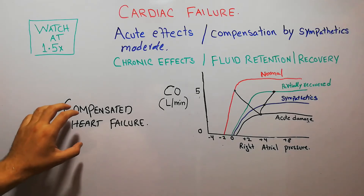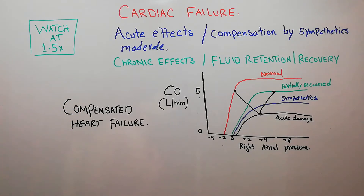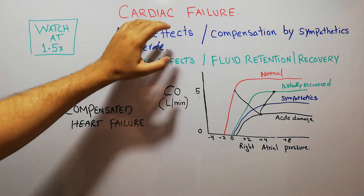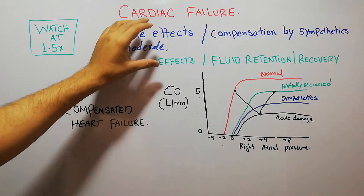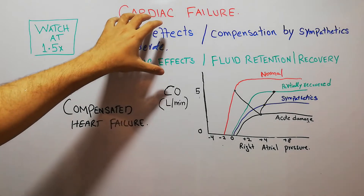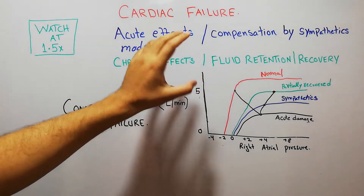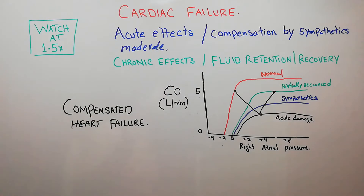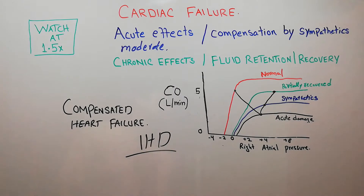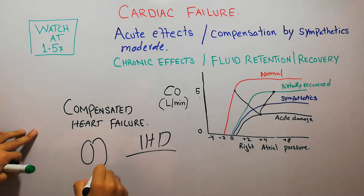Today we are going to discuss compensated heart failure, but first we must summarize and revise the acute and chronic effects of cardiac failure from our last two lectures. Cardiac failure can occur due to many reasons, and the most important cause is ischemic heart disease, which occurs when blood flow to the heart muscles is compromised.